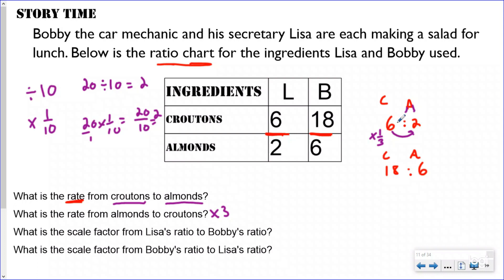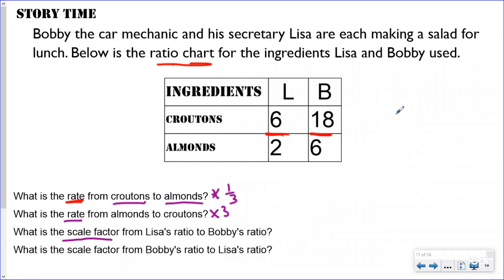We want to keep everything as multiplication when we can. So our rate going from croutons to almonds is multiplying by one-third. A rate is when you are comparing the same two numbers within the ratio. Now I'm going to erase everything so we can talk about scale factor. For this one I'll write the ratios as fractions — it's easier to see. Lisa still has six croutons to every two almonds, and for Bobby, 18 croutons.